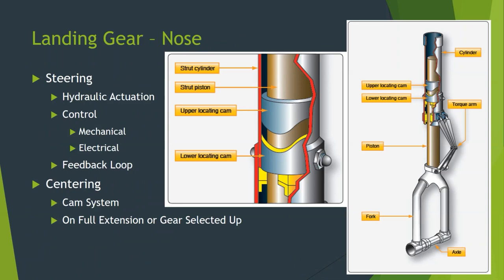One requirement is that gear be able to be steered. In order to steer, we need a nose gear that can rotate, and that's typically done hydraulically. It can be controlled either mechanically through cables, push-pull cranks, and such, or electrically — which works similar to a fly-by-wire flight control system. Nose gear steering, whether mechanically or electrically controlled with hydraulic actuation, is essentially the same as flight controls that are mechanically or electrically controlled and hydraulically operated.